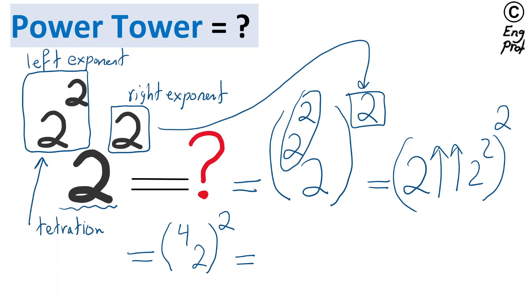It's fine to write it this way as well, so tetrated to 4 to the power 2, which means raise 2 to the power 2 four times. This is a hyper 4 operation. It means we are talking about 2 to the power 2 to the power 2, repeat 4 times, raising 2 to the power 2, and then the whole thing to the power 2, which is our original right exponent.